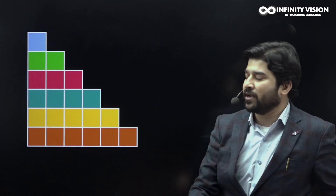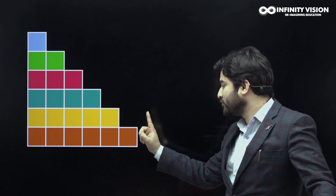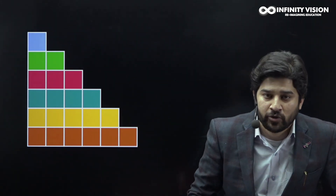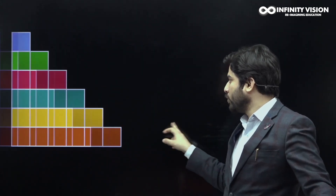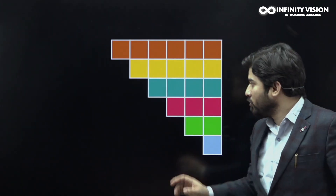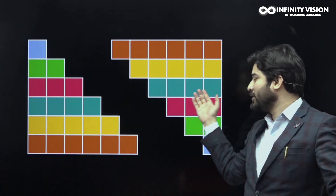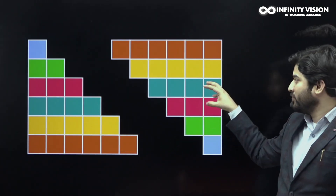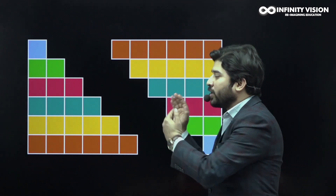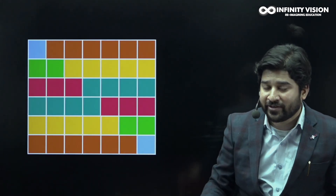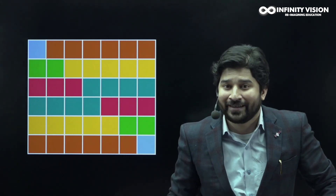Now let's explore this further. You have this sixth triangular number, made of 1 plus 2 plus 3 plus 4 plus 5 plus 6 blocks. I am going to take a copy of it, rotate it, and it would look something like this. These two copies, the original and a duplicate rotated by 90 degrees, are then aligned together to create a perfect rectangle.